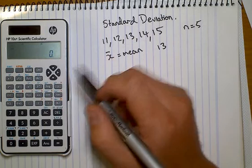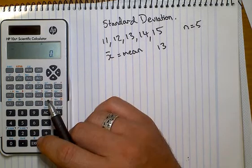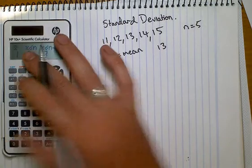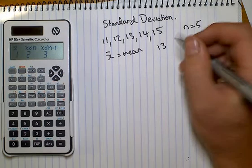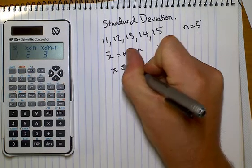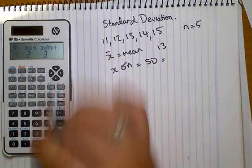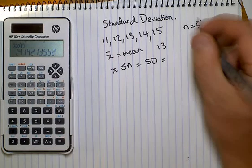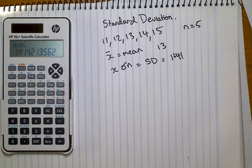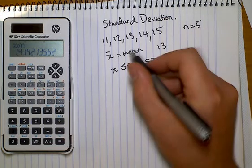What we'll do next is look at the standard deviation. This little symbol here is sigma. So Shift, 2, then select sigma — equals 1.41. So that is our standard deviation.